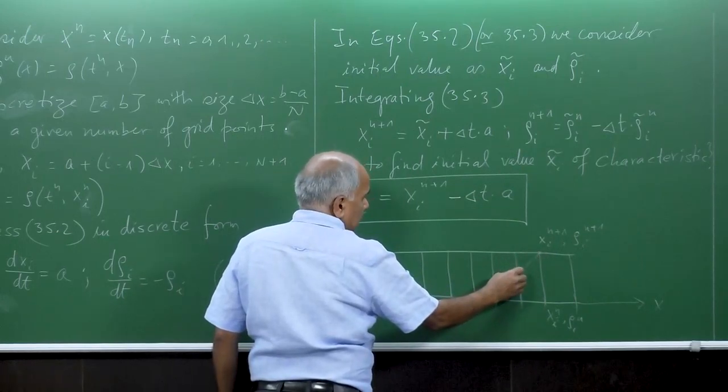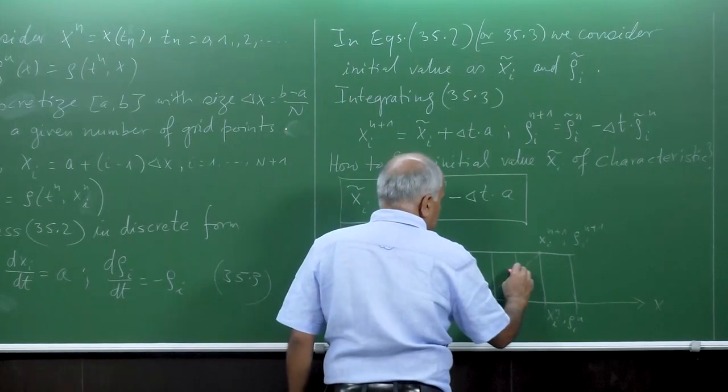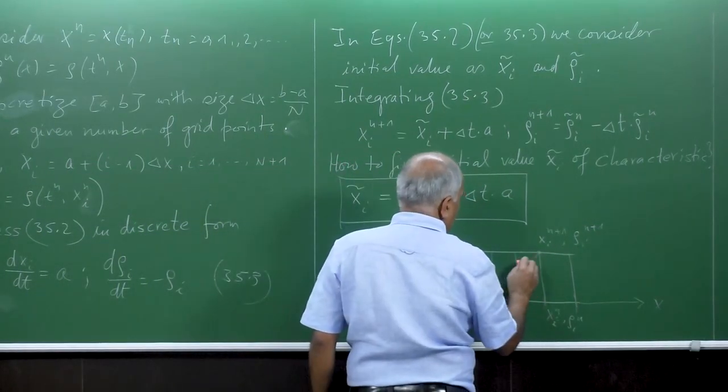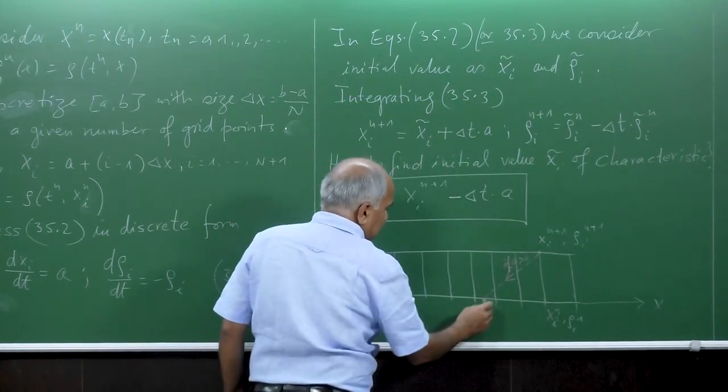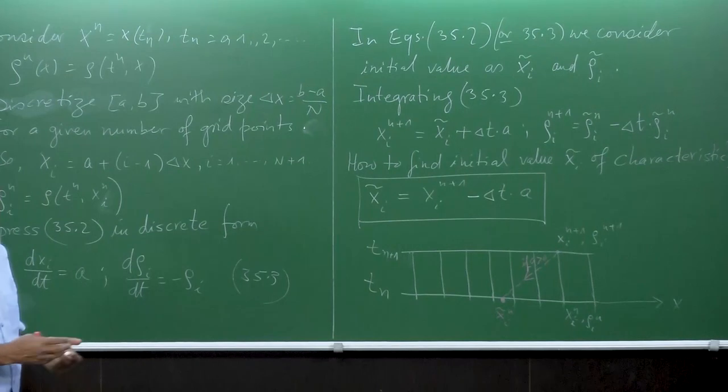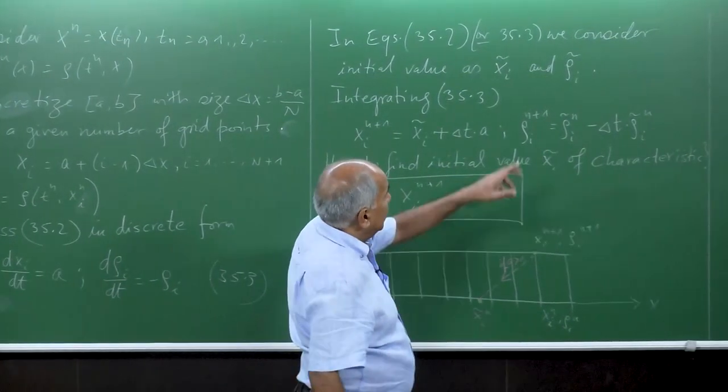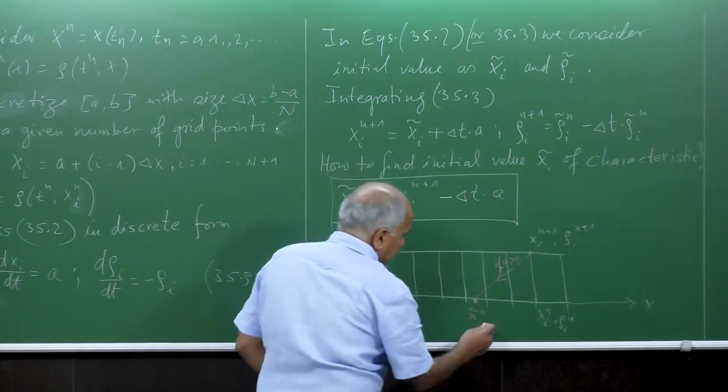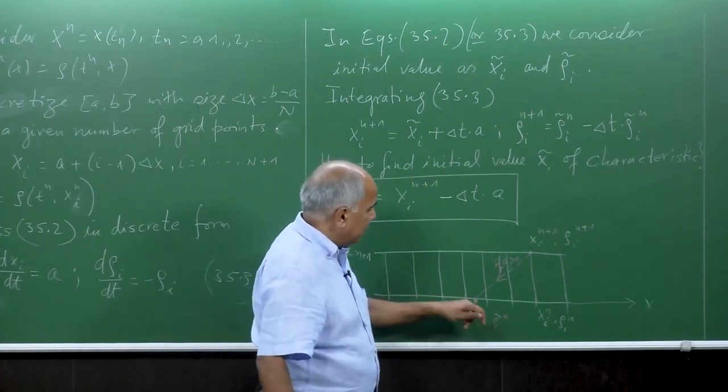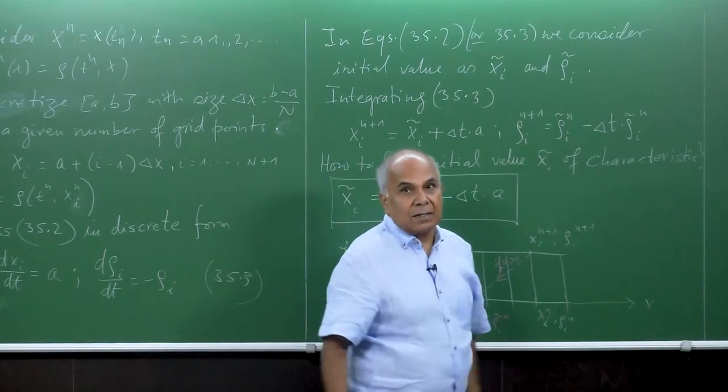So if A is positive, you follow the backward characteristics and you come back here. So this is our x i tilde of n. So now we found our initial position of the characteristics. And now if we find the initial position of the characteristics here, we have to compute rho i tilde of n. Once we know rho i tilde of n here, then we plug this value and then we get rho i n plus 1.